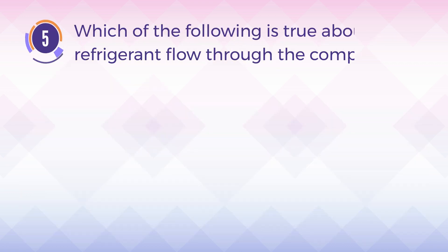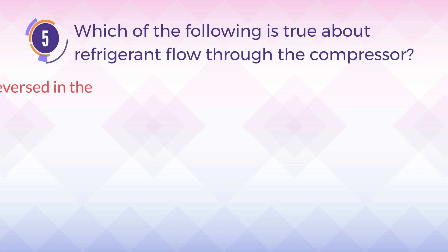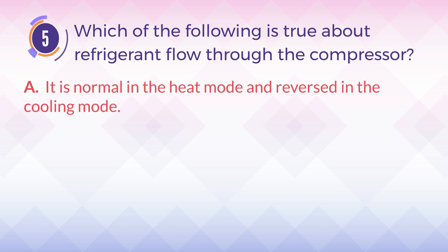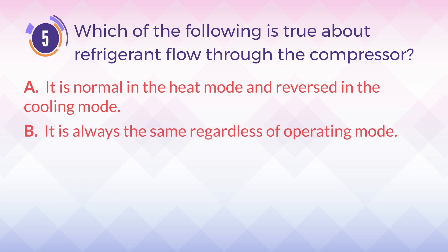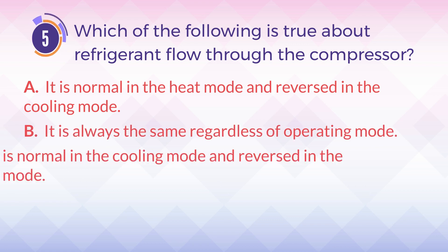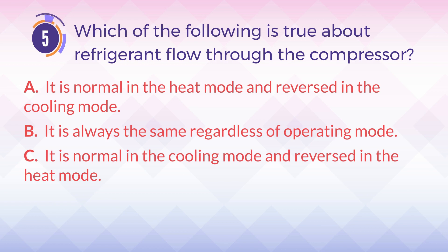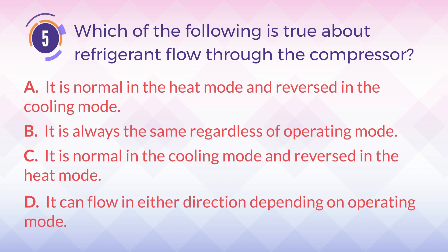Number 5. Which of the following is true about refrigerant flow through the compressor? A. It is normal in the heat mode and reversed in the cooling mode. B. It is always the same regardless of operating mode. C. It is normal in the cooling mode and reversed in the heat mode. D. It can flow in either direction depending on operating mode.